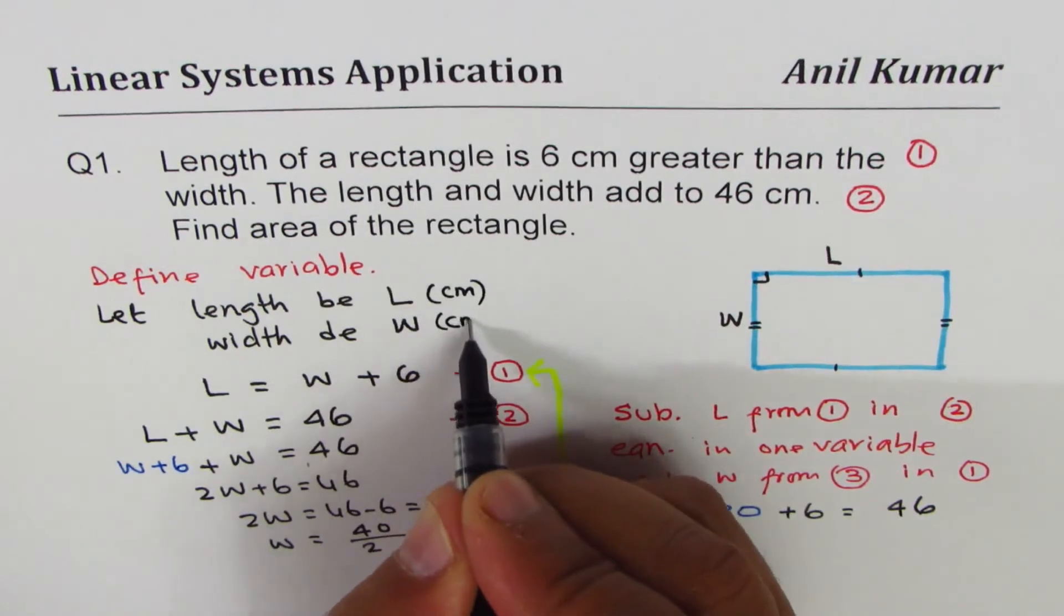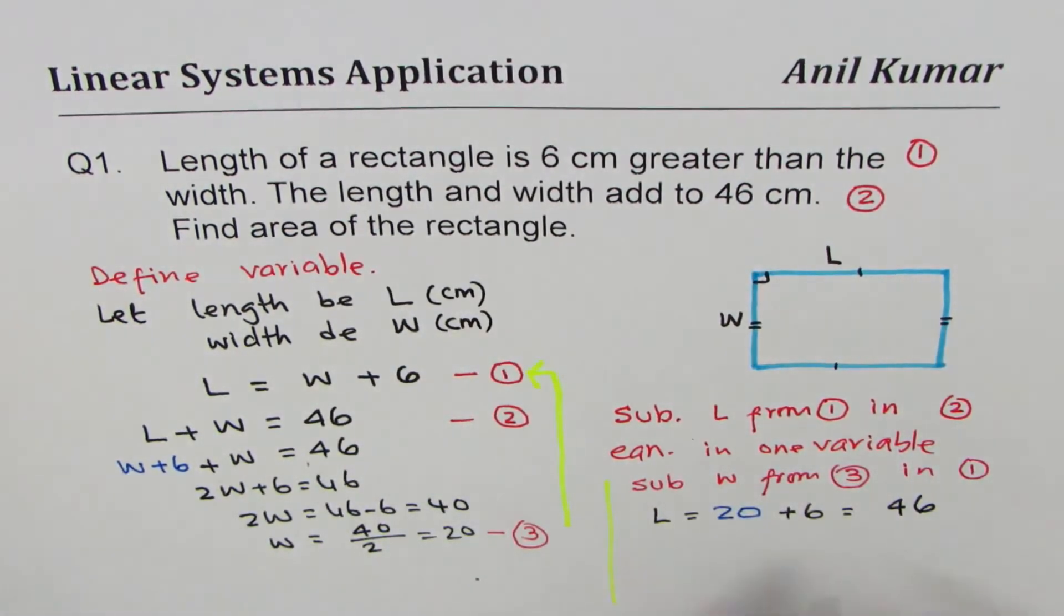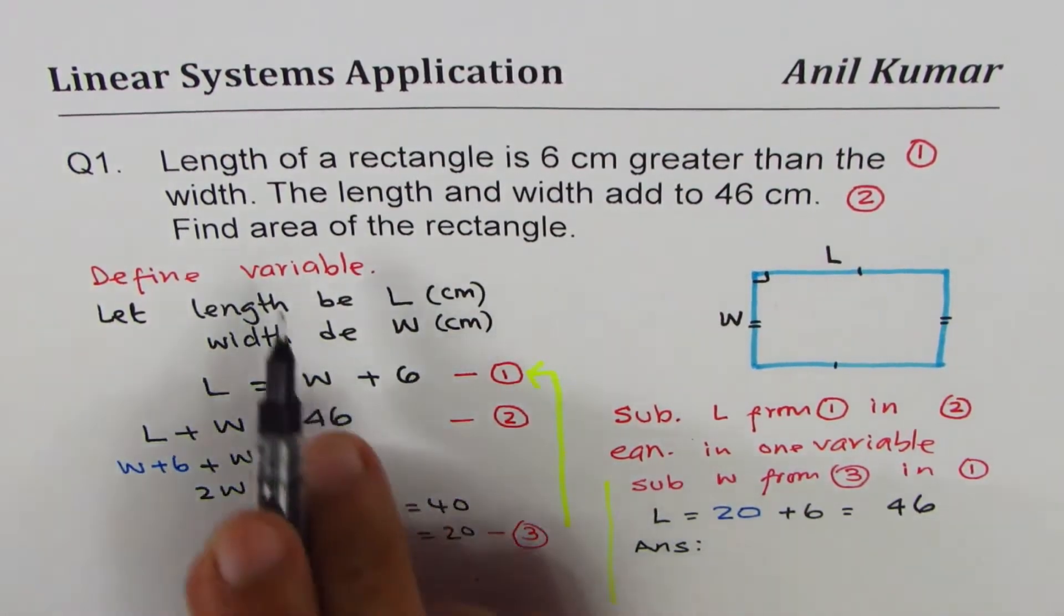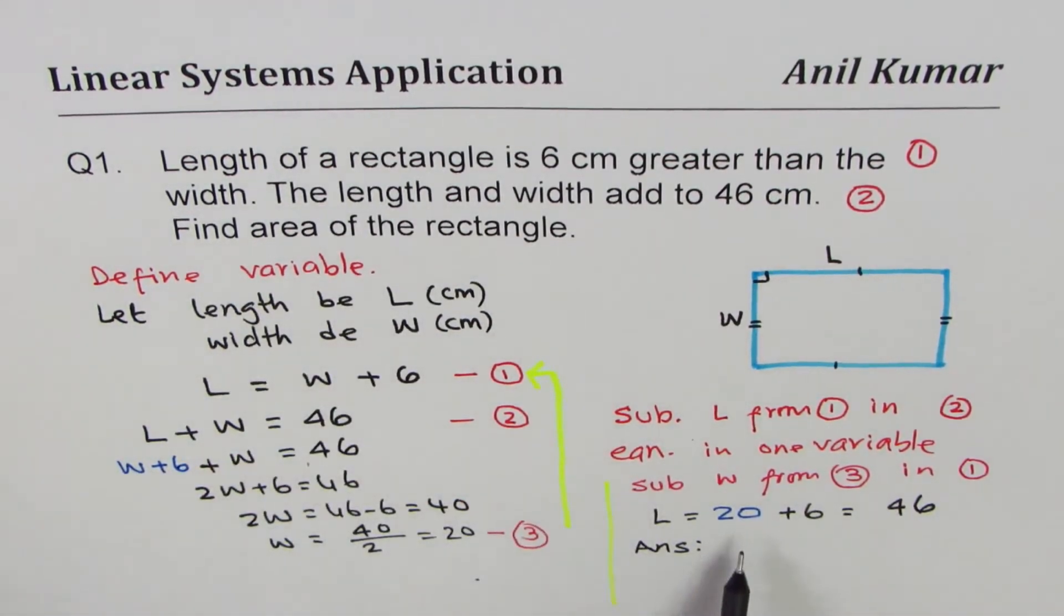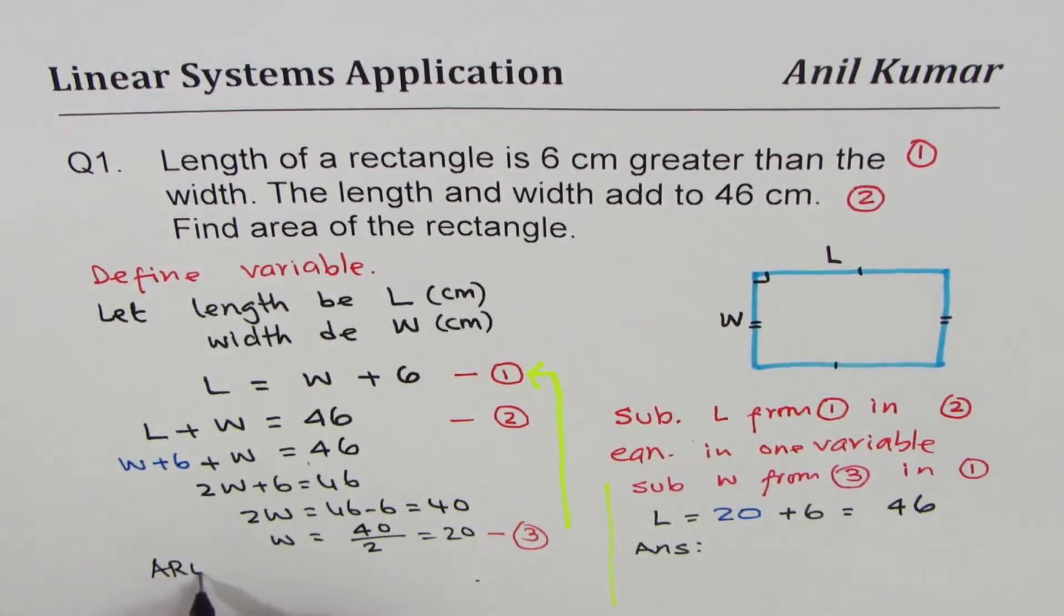Second part is units. You could have written L in cm, W in cm. When you write down the answer, write units in the answer. We don't only have to find length and width, we have to find area.